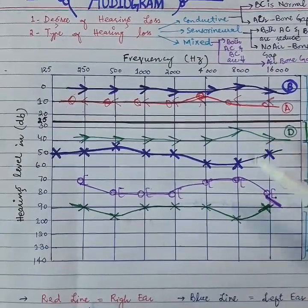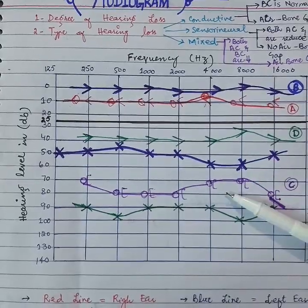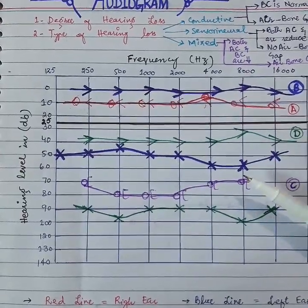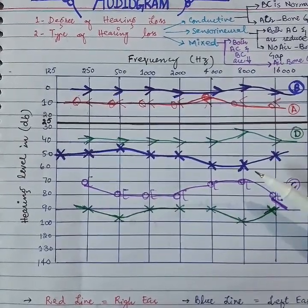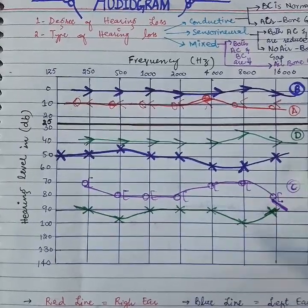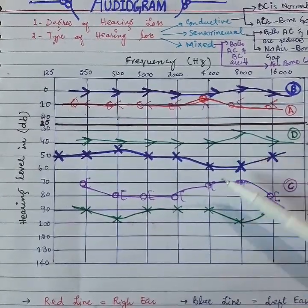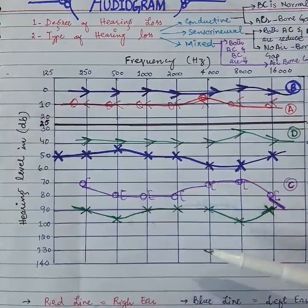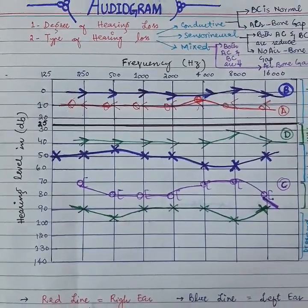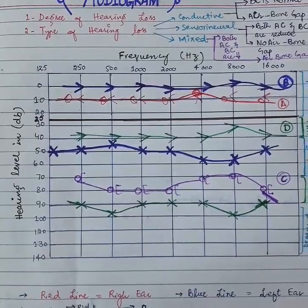One condition of conductive hearing loss and another condition of sensorineural hearing loss are both present. It is mixed hearing loss. The audiogram shows mixed hearing loss.